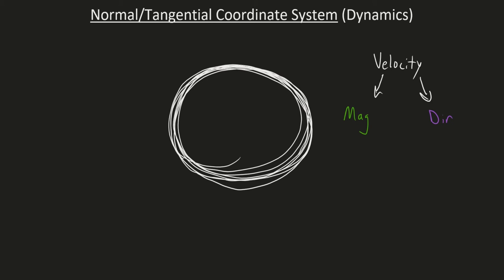Velocity is a vector. It has a magnitude — that's how fast we're going, the speed — and it also has a direction: basically, where am I pointed at that instant? So because the direction of my velocity vector is changing, I will have acceleration.